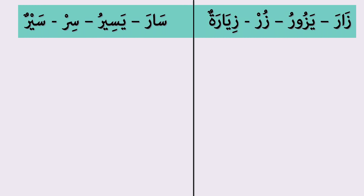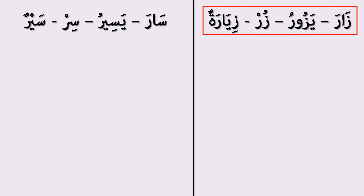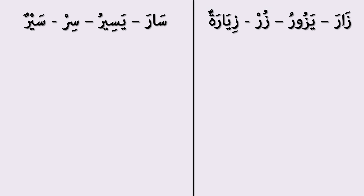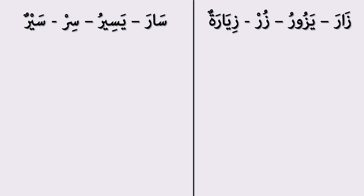As you see, we have two Arabic verbs here. The first one is زار يزور زيارة (zara, yazuru, ziyaratun) with a za sound, and the other verb is سار يسير سير (saara, yasiru, sir) with a sa sound. Let's see the meaning of each.